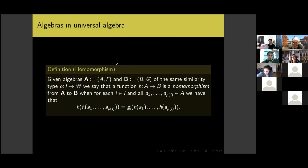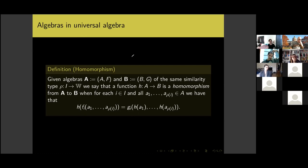The definition of a homomorphism of algebras is exactly what you would expect. If we have two algebras with the same similarity type, a function h from the underlying set of A to the underlying set of B is called a homomorphism when, for each basic operation and any tuple of appropriate size from A, you can either apply the operation and then h, or apply h to each element and then apply the corresponding operation in B — and both give the same result.